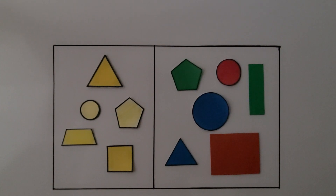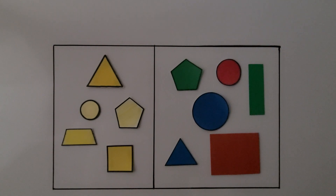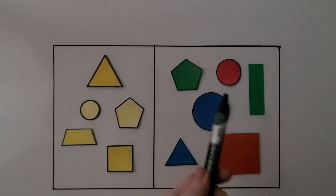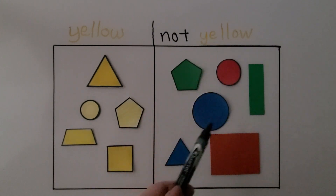These shapes are sorted and classified into two categories. Can you see what the categories are? Can you figure it out? What do we notice about this set? What do they have in common? What is the same about them? These are different colors, aren't they? These are not yellow.